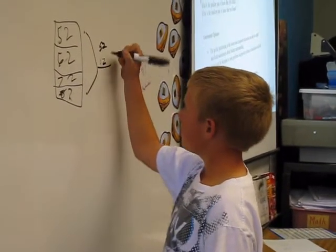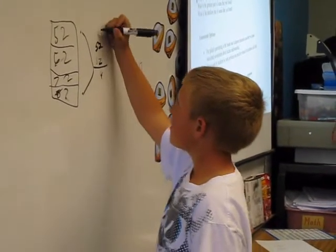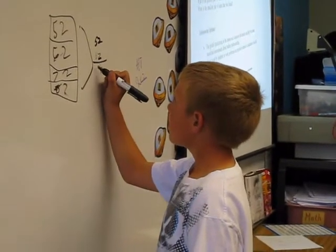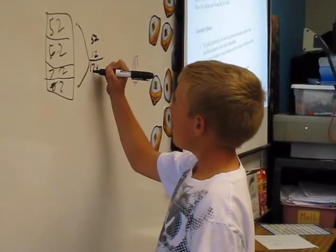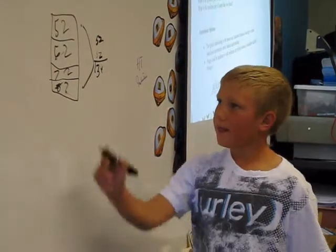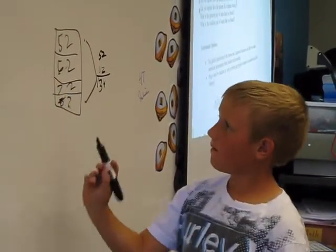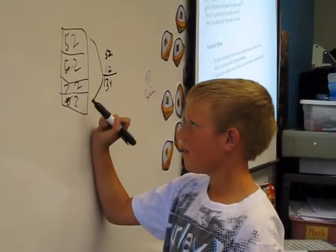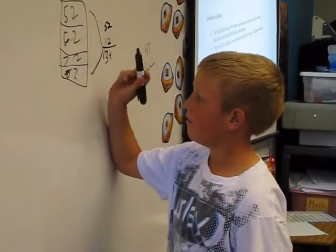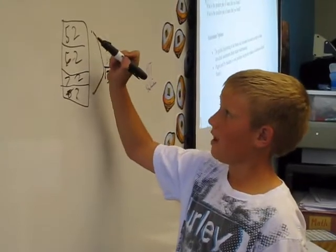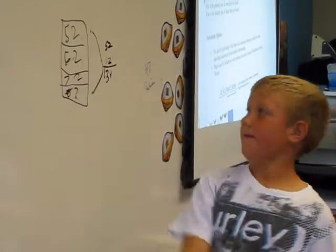And then this one and this one are sort of the same, because that one is 10 less than 82, but then that one is 10 more than 52.